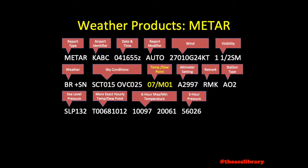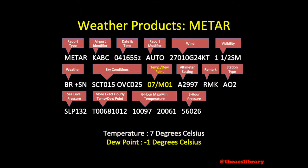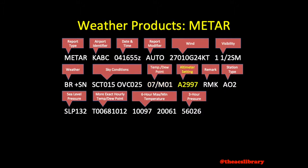Temperature and dew point are listed as two-digit temperature in Celsius slash two-digit dew point in Celsius. A negative value is preceded by a capital M. In our example, we have a temperature of 7 degrees Celsius and a dew point of negative 1 degree Celsius. Lastly, we have our altimeter setting presented in inches of mercury — in our example, 29.97 inches of mercury.